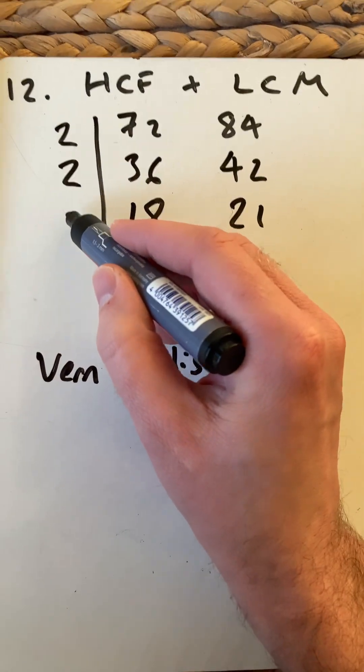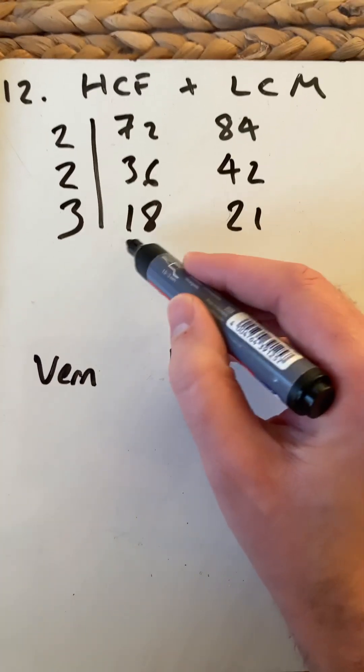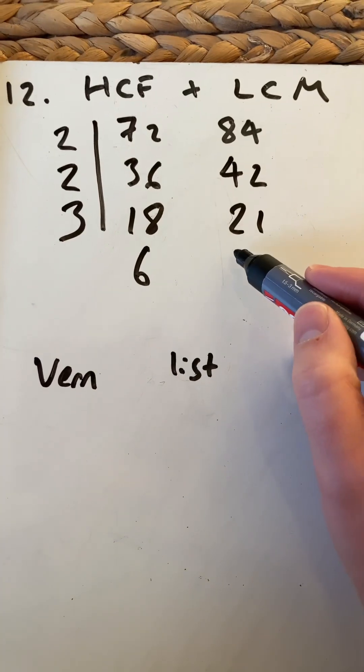The lowest prime factor now is 3. 18 divided by 3 is 6, and 21 divided by 3 is 7.